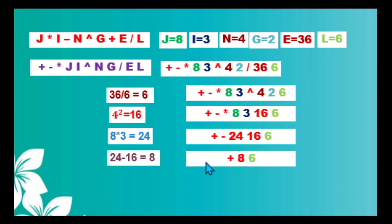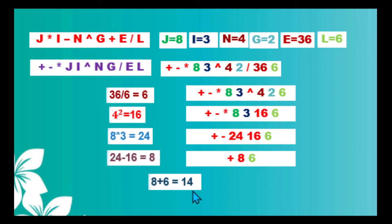Our prefix expression now is: addition operator, 8 and 6. Since addition is the only operator left, we now perform the operation: 8 plus 6 equals 14. So 14 is our obtained value given this prefix expression.